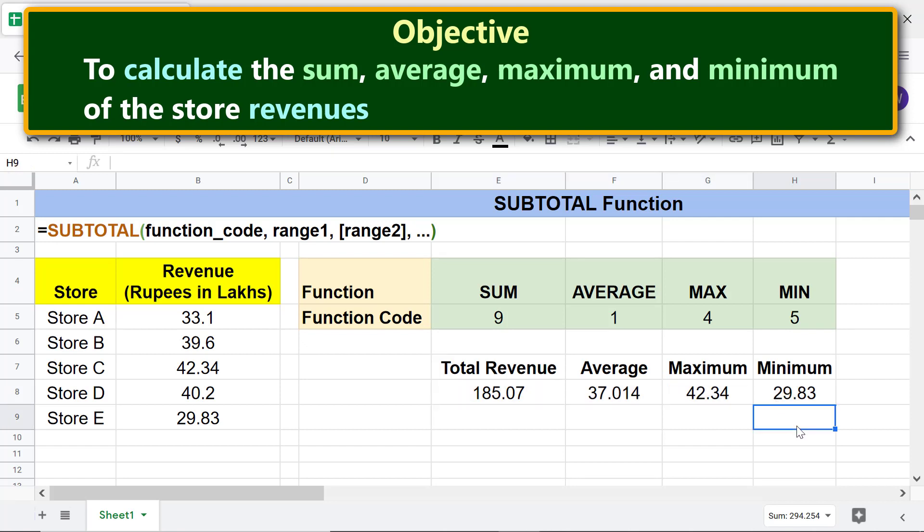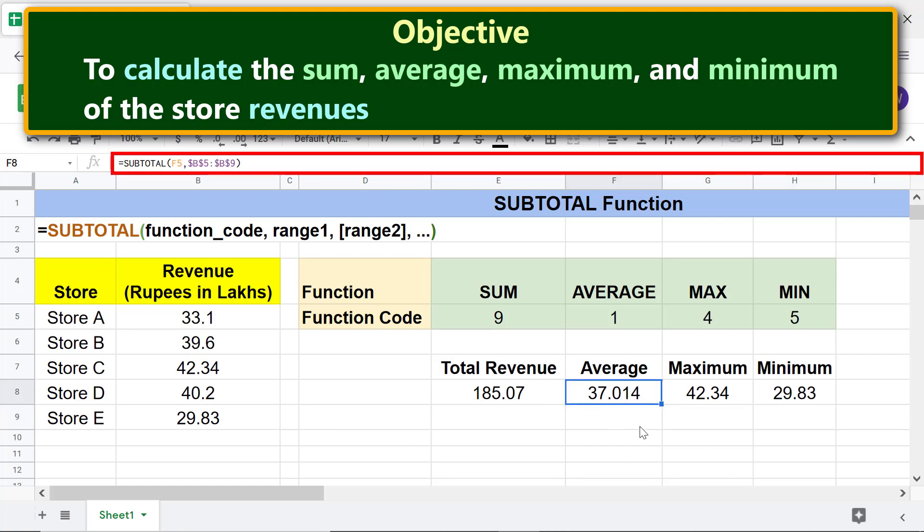Deselect. Let's take a look at the formula in this cell. Only the function code has changed. The address has not changed because we made it absolute.